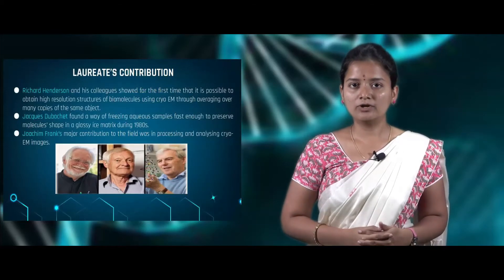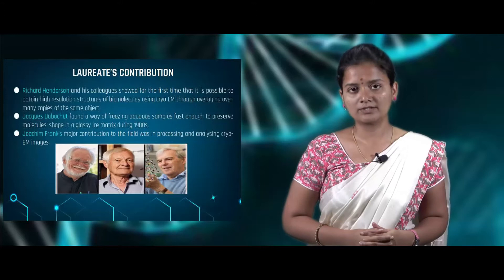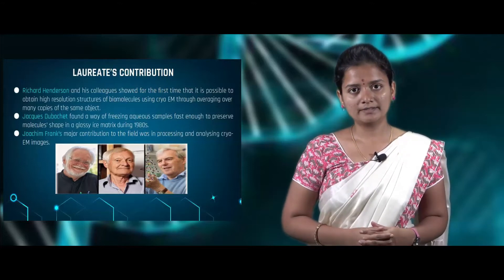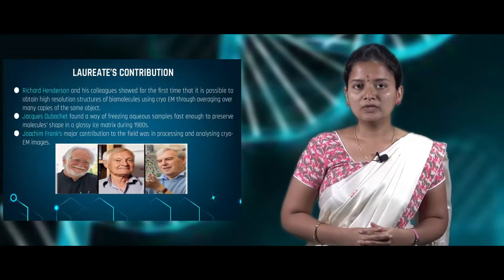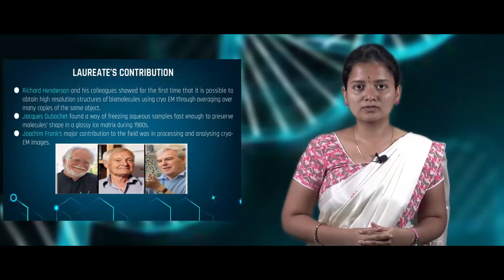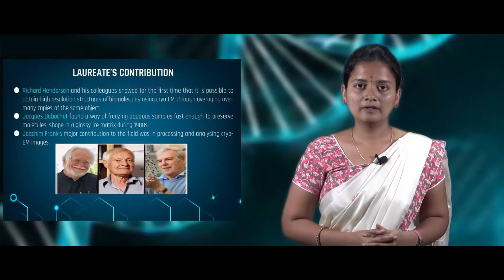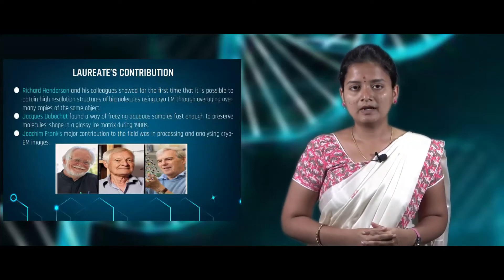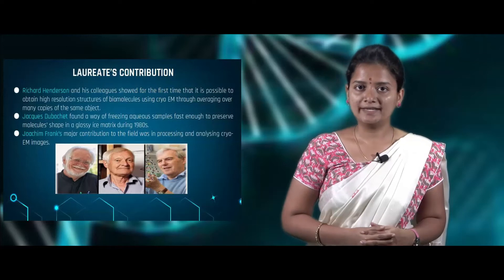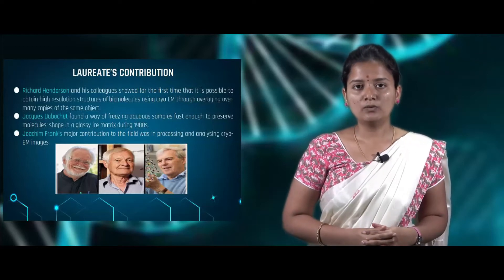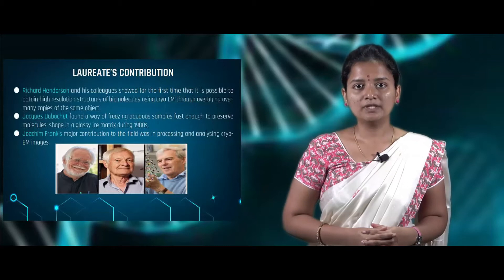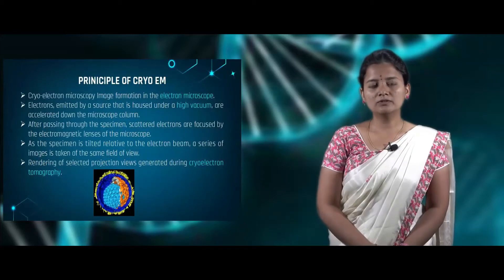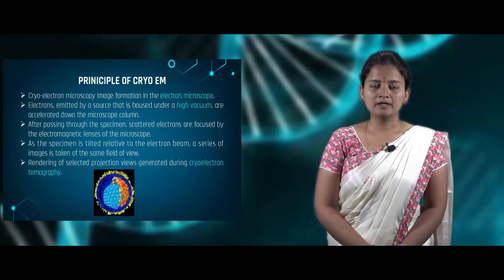Now we look at the contribution of each scientist in the development of cryo electron microscopy. Henderson and his colleagues showed for the first time how to detect the 3D structure of any biological molecule with higher resolution using cryo electron microscopy. Dubochet showed how to preserve or freeze biological molecules by maintaining their molecular shape in a glassy ice matrix during the 1980s. Frank showed how to process and image the 3D structure of proteins or biological molecules with the help of cryo electron microscopy.